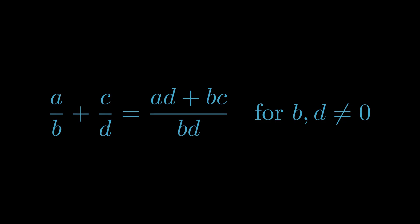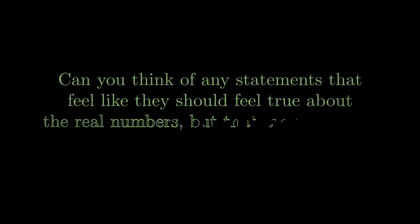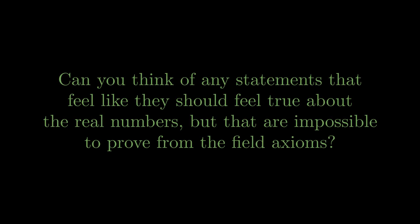Assuming we define integer exponents in the usual way, can you prove that squaring binomials works as expected? That (a + b)² = a² + 2ab + b². What are some other examples of statements that can be proven from the field axioms? Can you think of any statements that feel like they should be true about the real numbers, but that are impossible to prove from the field axioms?